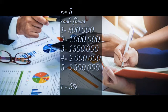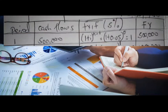We are going to draw a table and calculate each year one by one. The table has five columns: period, cash flows, future value interest factor, and the interest rate of 5%, then the future value. For year one, our cash flow is 500,000.